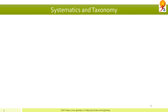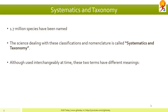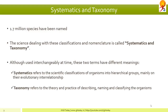We come to systematics and taxonomy. There are 1.7 million species of living organisms that have been given scientific names and described. The science of dealing with, systematically classifying, and giving organisms scientific names comes under systematics and taxonomy. Although the two terms are at times used interchangeably, their meanings are quite different. Systematics refers to the scientific classification of organisms into hierarchical groups, mainly on their evolutionary interrelationship, while taxonomy refers to the theory and practice of describing, naming, and classifying organisms.